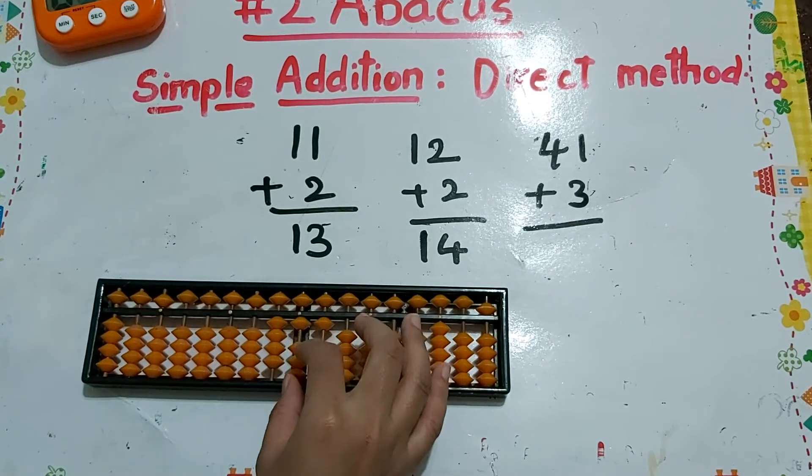Next one, 41 plus 3, the answer is 44. Next one, 21 plus 20. The answer is 41.